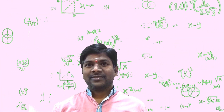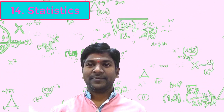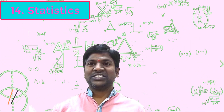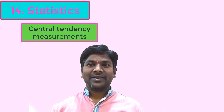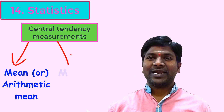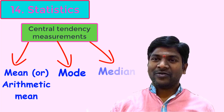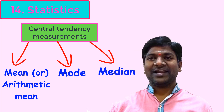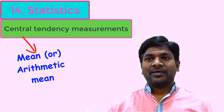Hi viewers and students. In the last class we discussed central tendencies from the statistics chapter and their usages. Let us recall the types of central tendencies: mean, also known as arithmetic mean or average; mode; and median. These are the three central tendencies. In the last class we discussed the first central tendency, that is mean.